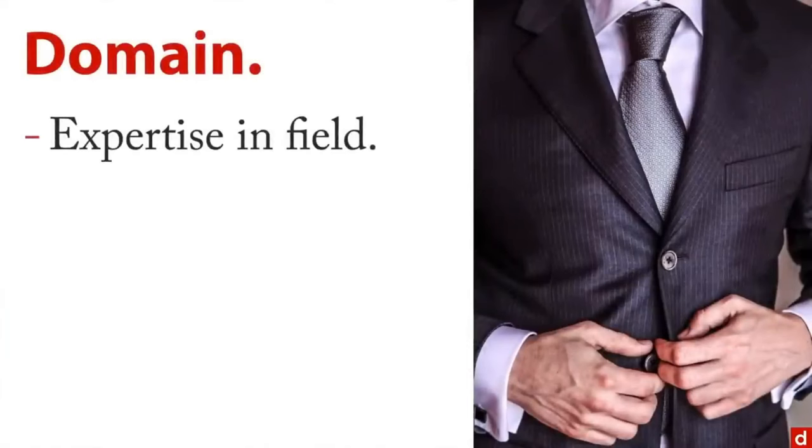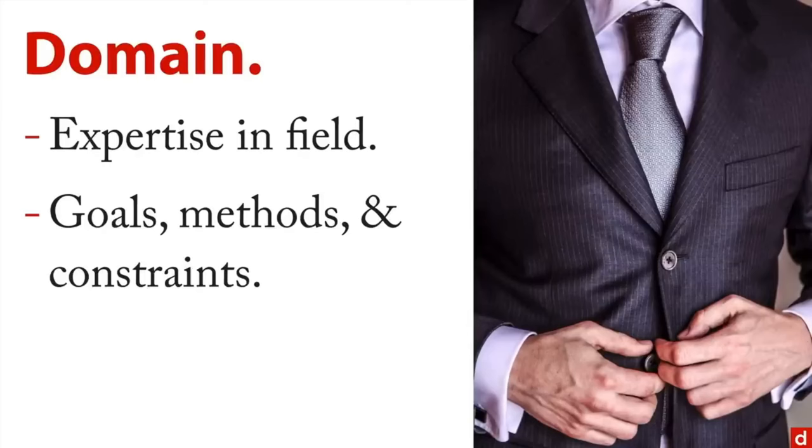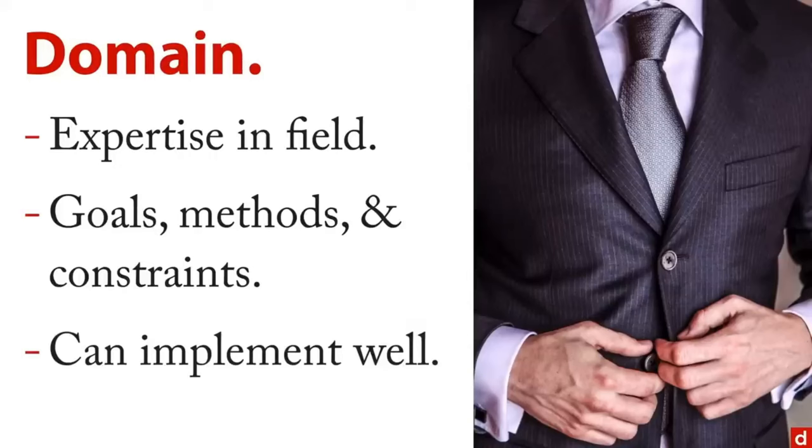And the third element of the data science Venn diagram is some sort of domain expertise. Think of it as expertise in the field that you're in. Business settings are common, you need to know about the goals of that field, the methods that are used, the constraints that people come across. And it's important because whatever your results are, you need to be able to implement them. Data science is very practical, and it's designed to accomplish something. Your familiarity with a particular field of practice is going to make it that much easier and more impactful when you implement the results of your analysis.